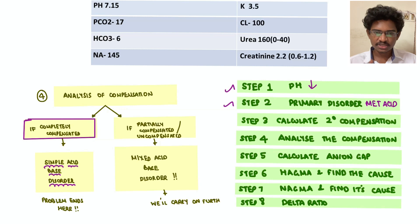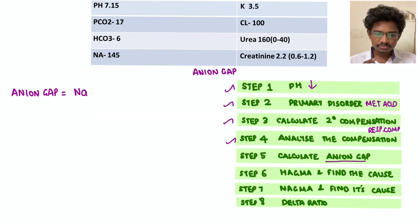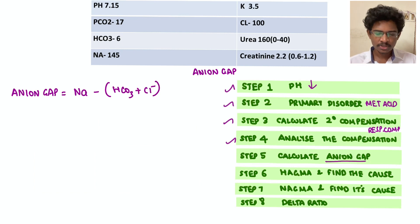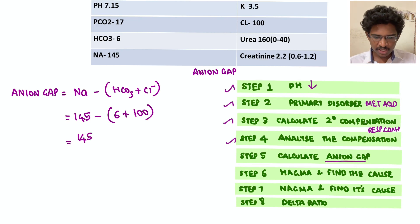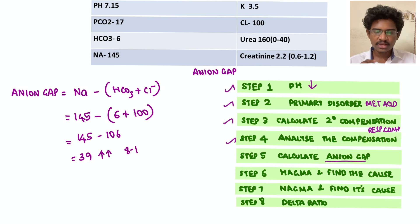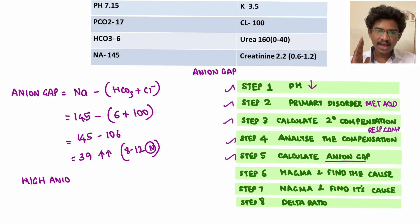Step five: anion gap — sodium minus (bicarb + chloride) = 145 minus (6 + 100) = 39. More than 12, so high anion gap metabolic acidosis is confirmed.